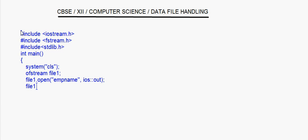Now see how I'm going to write into the file. I have taught you how to write to the file in earlier sessions. Now I am writing to the file in a shortcut way. I say file1 and I am going to give the names of some employees. I write 'Amit Gupta' and here I give a backslash n so that I come to the next line. Then 'Monica Sharma' is another employee name.